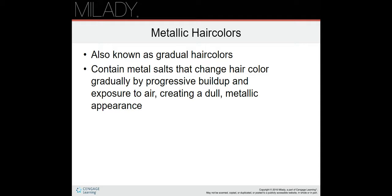Metallic hair colors, also known as gradual hair colors, contain metal salts. They change hair color gradually through progressive buildup and exposure to air, creating a dull metallic appearance. These products require frequent applications and have historically been marketed to men. The main problems are unnatural-looking colors and a limited range of shades. Metallic hair colors also restrict the application of any chemical service to the hair due to the metal salts. You have to wait until it grows out before using regular hair color.